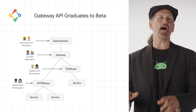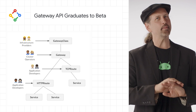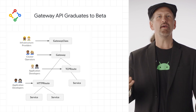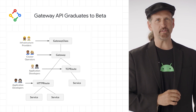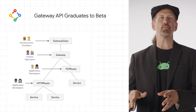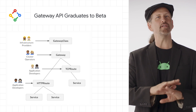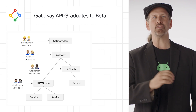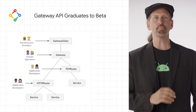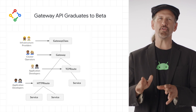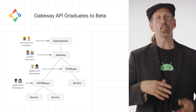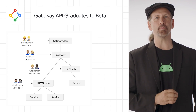The Gateway API has graduated to beta, enabling many new features in Kubernetes, including traffic splitting, header modification, and forwarding traffic to back-ends in different namespaces. The beta milestone reflects newfound stability with over a dozen implementations of the API, many of which are passing a comprehensive set of conformance tests, ensuring that users will have a consistent experience when using this API.